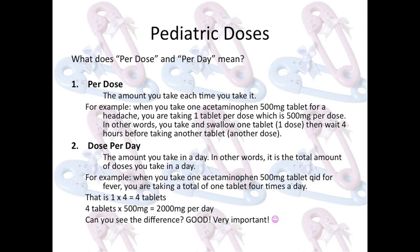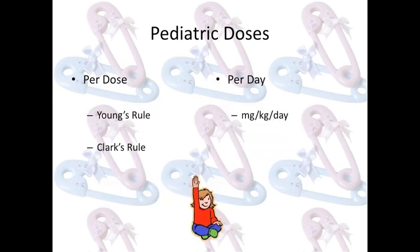Good — that's very important. These are the two groups with the formulas you will need to calculate pediatric doses. In the first group, per dose, you have Young's Rule and Clark's Rule — both give you the per dose. Under per day, it's the milligram per kilogram per day formula, and that formula gives you the total milligrams per day.